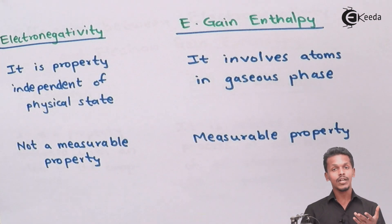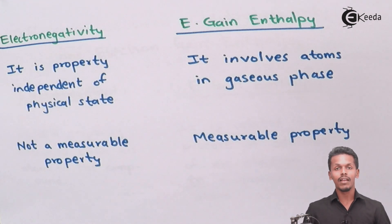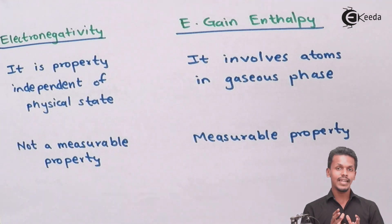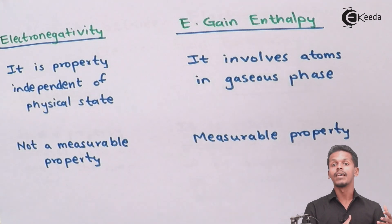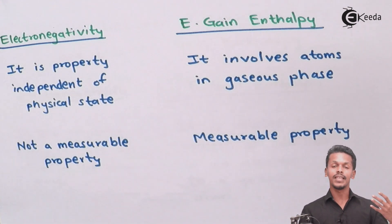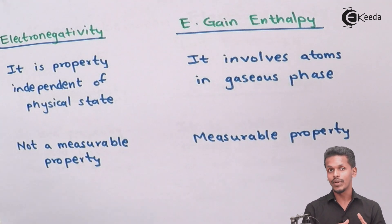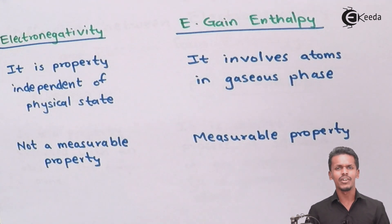Electronegativity, however, is not a measurable property because it depends on the scale being used — the Pauling scale or the Mulliken scale. Its value does not remain constant for all situations, and moreover we cannot measure a particular electronegativity unless the atom is bonded with another atom. It also depends on the other atom associated with the atom whose electronegativity we are concerned about, so it is not a measurable quantity.